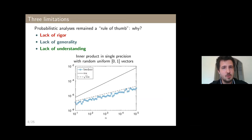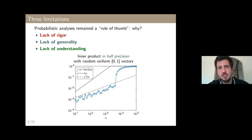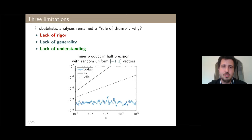But that's not always the case. If we switch from single to half precision, for large n the probabilistic rule of thumb is no longer true — the error kind of explodes and quickly reaches the worst-case error bound, which is above 1 for large n. And if we switch vectors from [0,1] entries to [-1,1] entries, we get yet another type of result: the backward error does not grow at all, seems independent of n, and we don't really know why.